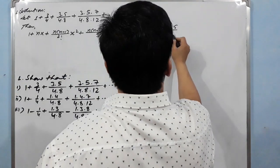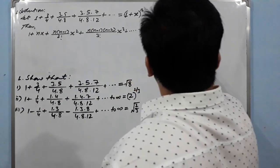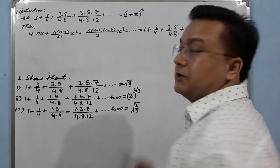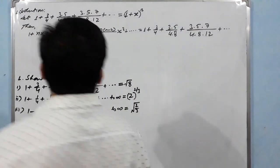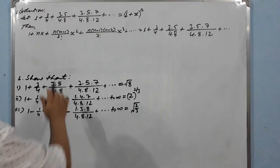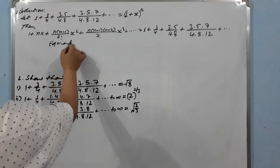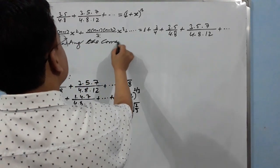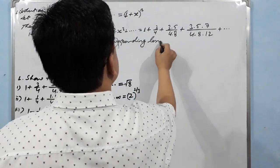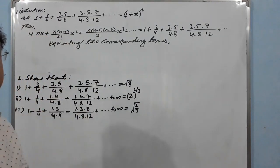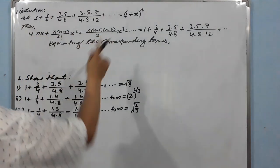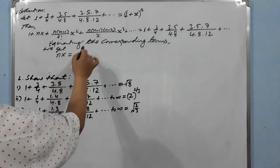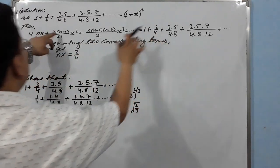Now, equating corresponding terms — first with first, second with second, third with third. From the first equation we get: nx = 3/4.